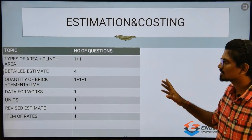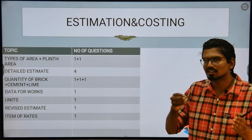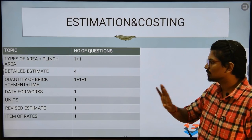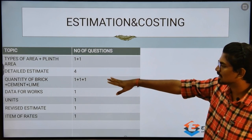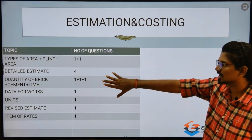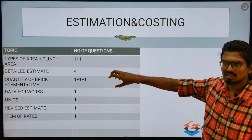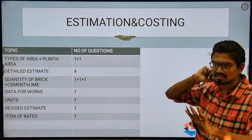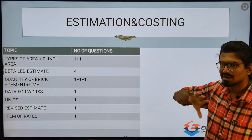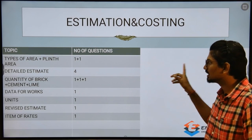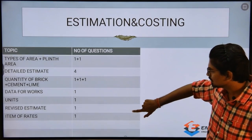Next is estimation and costing — this is a kind of factual subject with some problems. Brick, cement, lime — everything is factual. Almost everything is theory. There won't be many problems or formulas required. Estimation and costing is one of the three basic subjects to focus on.